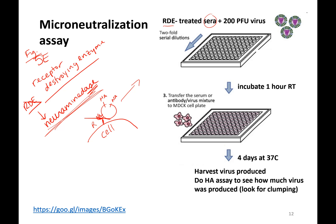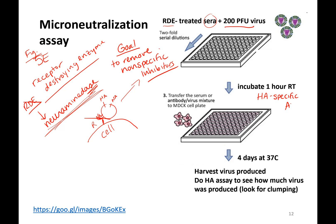What they do is treat the sera with neuraminidase, and the idea is to remove nonspecific inhibitors — things that would be binding to the antibodies and preventing them from working. So they take this RDE-treated sera, they add 200 plaque-forming units of virus — that's a quantity of virus — and they let it incubate, allowing HA-specific antibodies to bind to the virus and prevent infection.